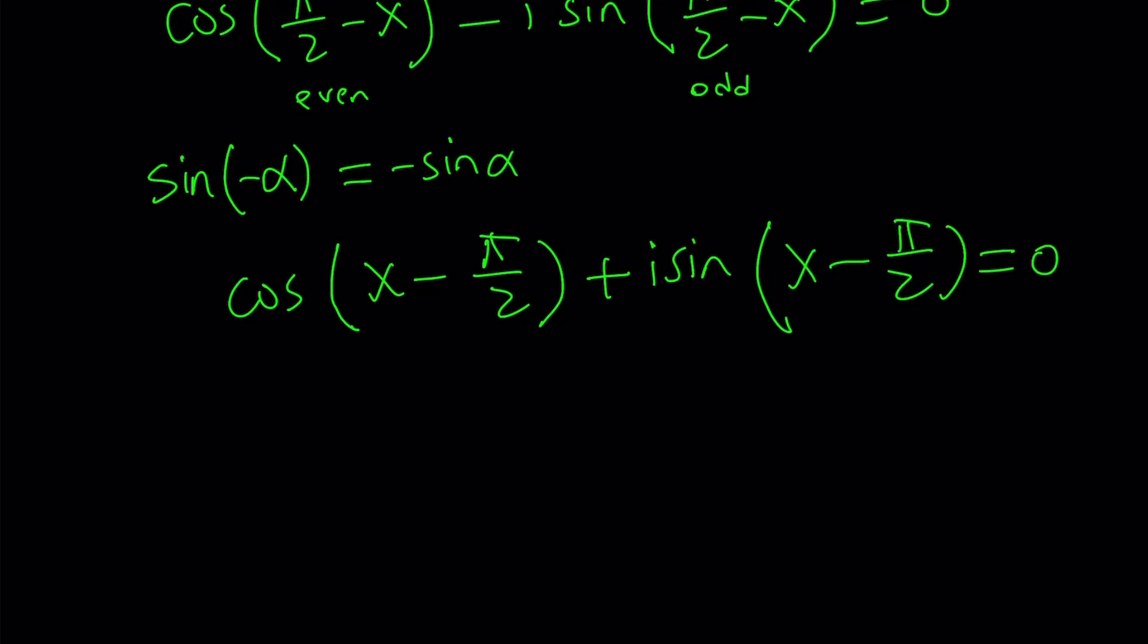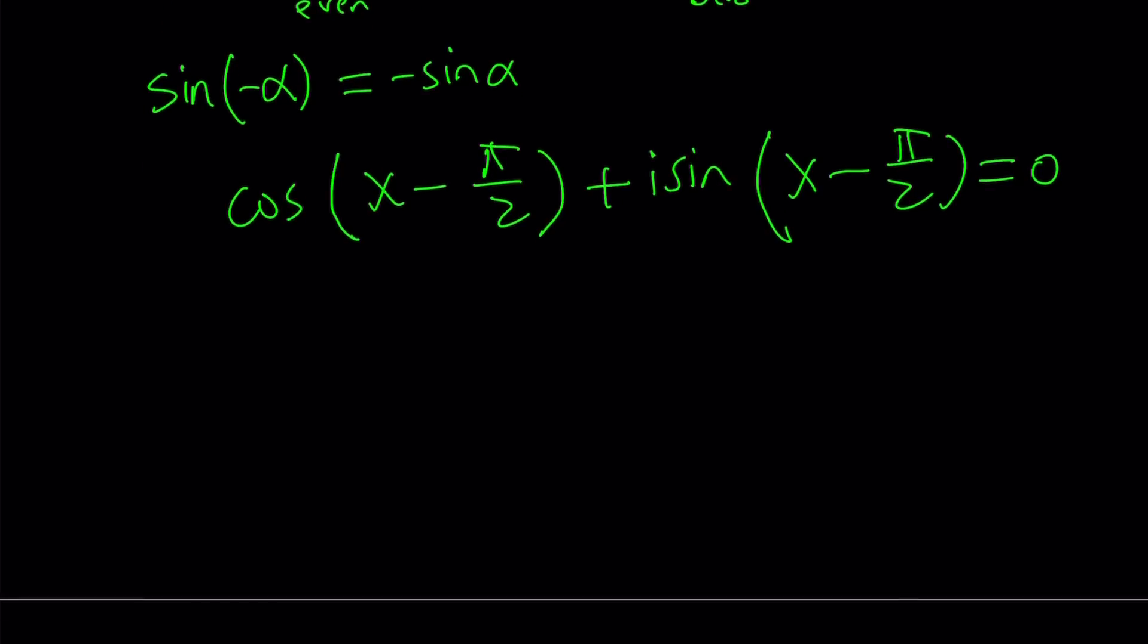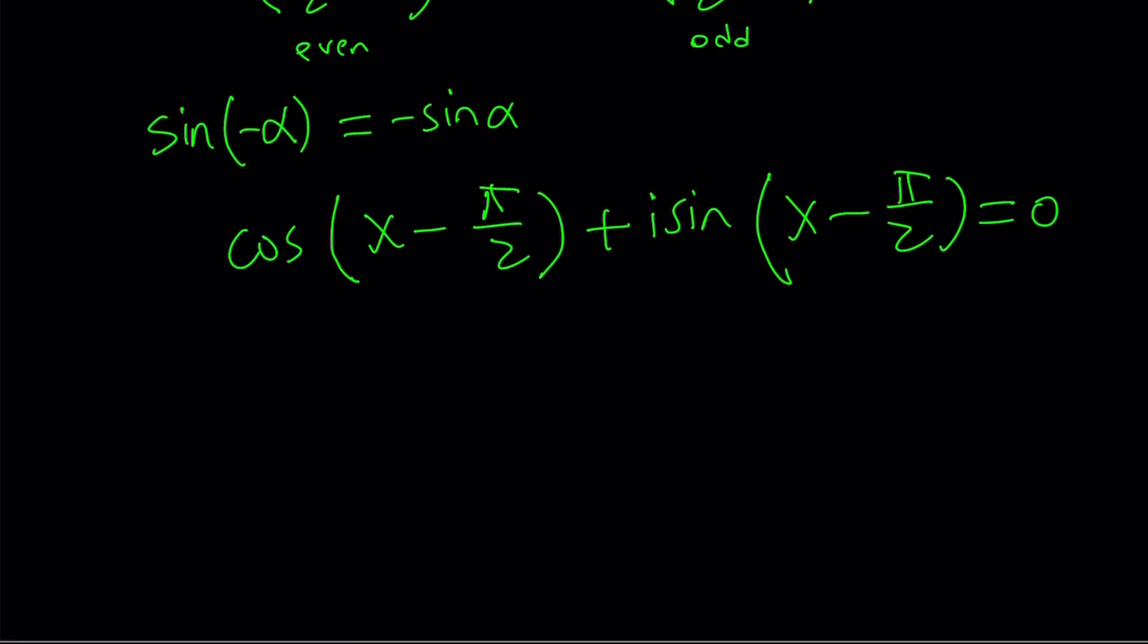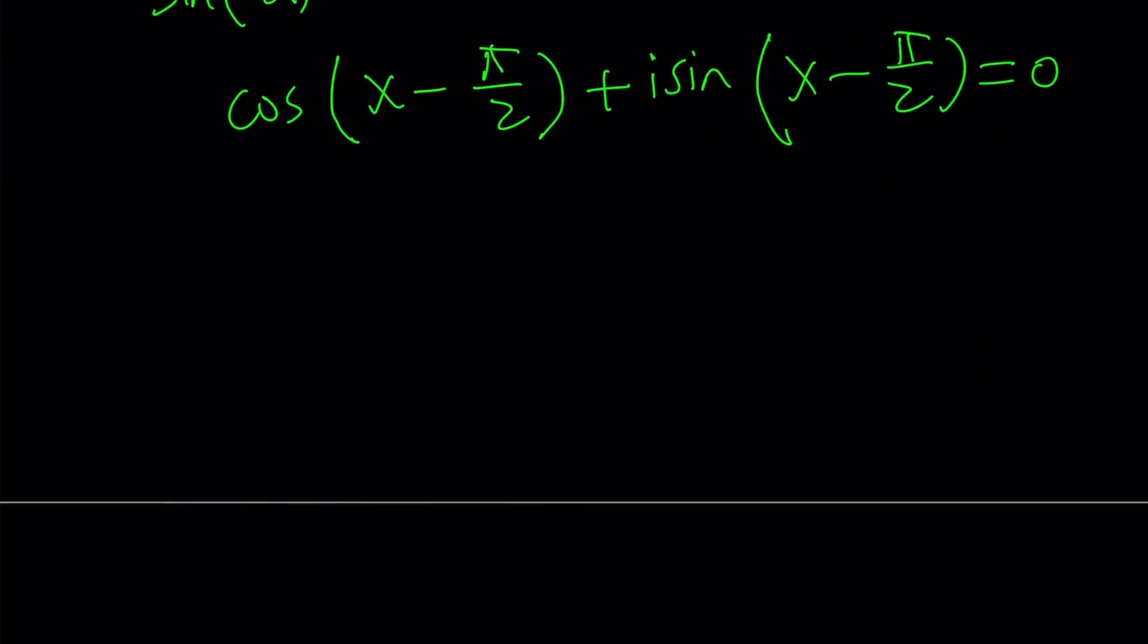And this equals 0. And that's my cat if you heard the meow in the background. So this is my equation. And Euler said this is equivalent to e to the power i times x minus pi over 2 equals 0. And that's very problematic. Why? Because e to the power something can never equal 0, even for complex x values. And correct me if I'm wrong.